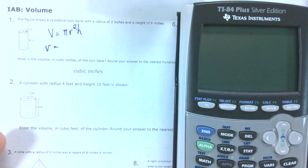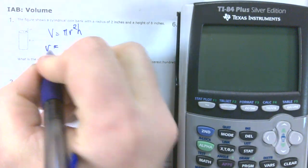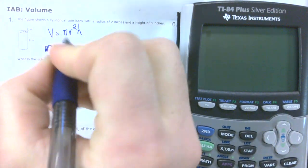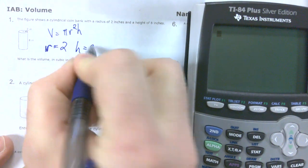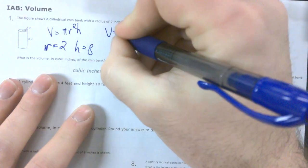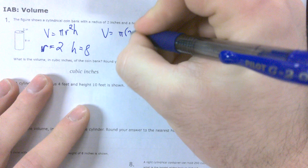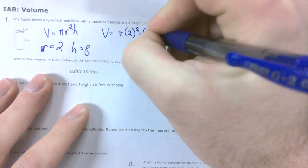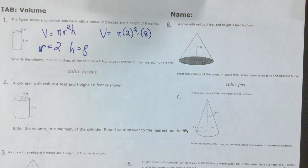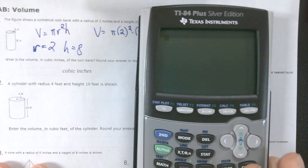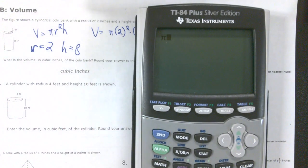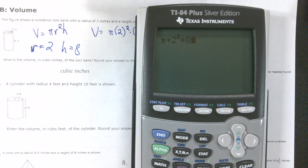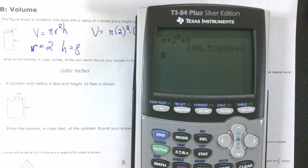What's my radius here in number 1? My radius is 2, what's my height? 8. So we're going to set up the equation, V equals pi times 2 squared times 8. So we'll go pi times 2 squared times 8.